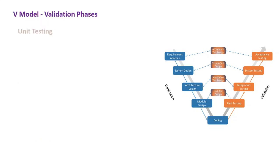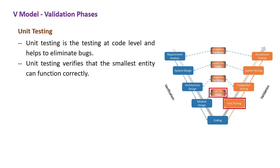Let us take the information on the validation phase of V-Model. The first is unit testing. Unit tests designed in the module design phase are executed on the code during this validation phase. Unit testing is the testing at code level and helps to eliminate bugs at an early stage. Unit testing verifies that the smallest entity can function correctly when isolated from the rest of the codes or units.